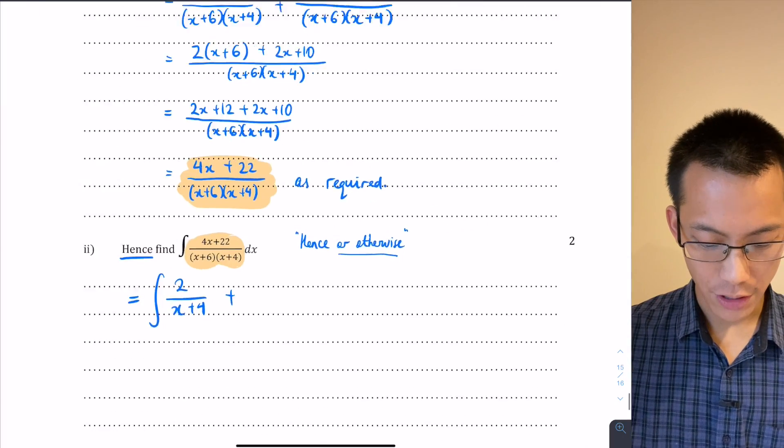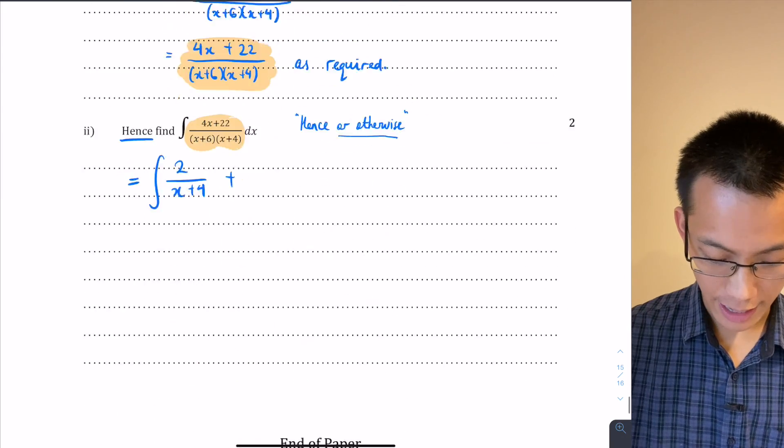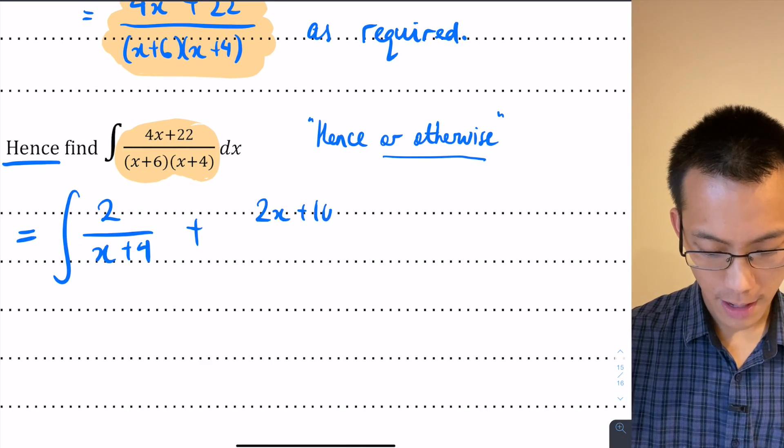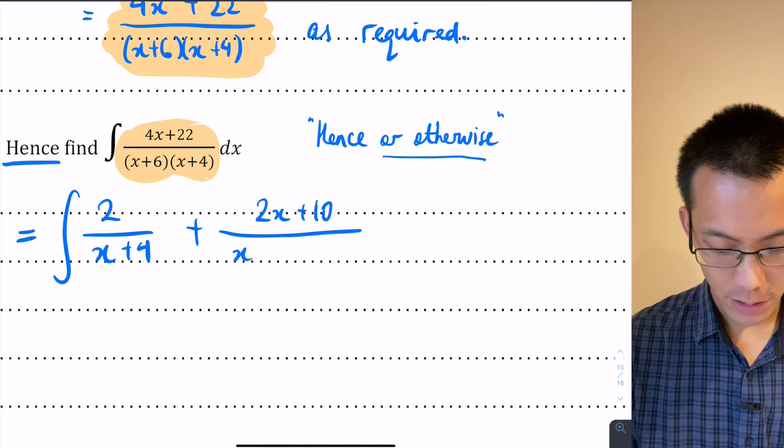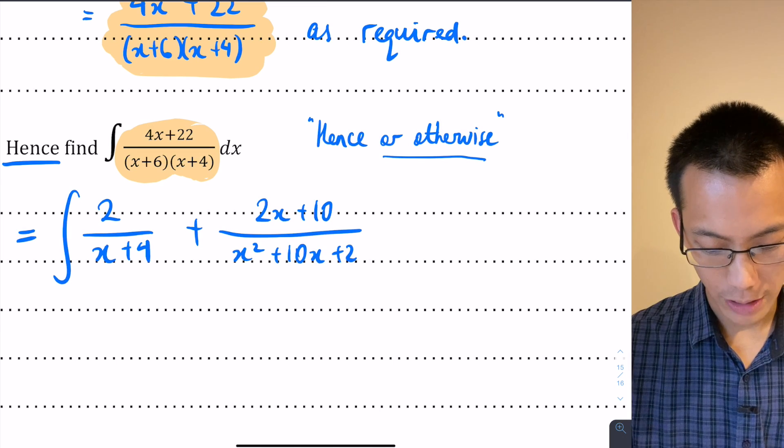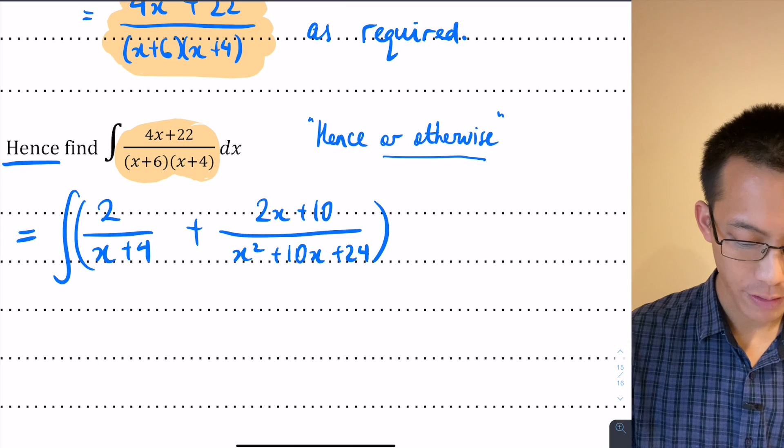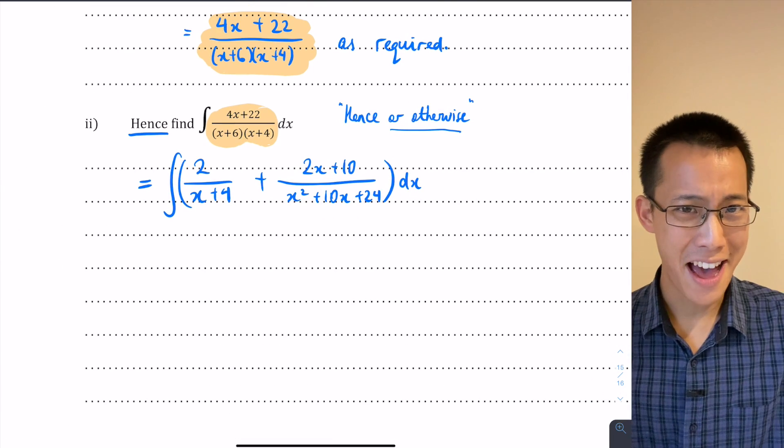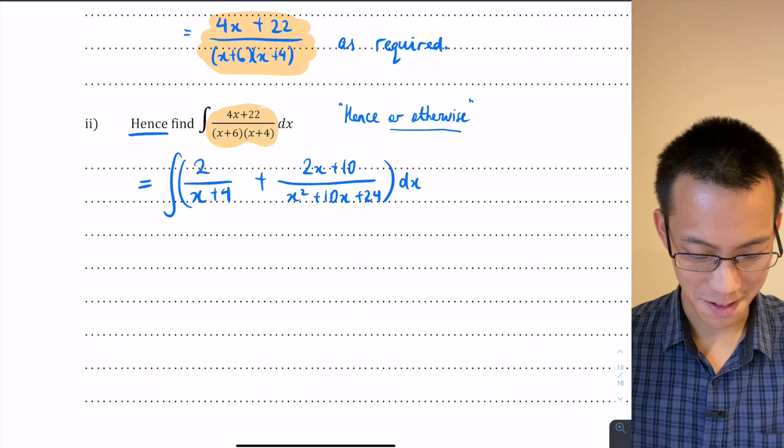And then I'm adding, what have I got here? 2x + 10, I'll use track of myself, 2x + 10 divided by x² + 10x + 24, and all of that I'm integrating with respect to x.